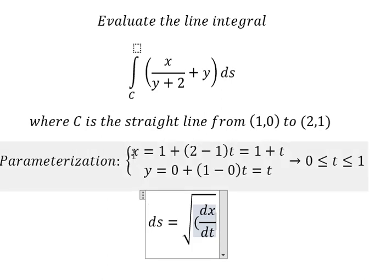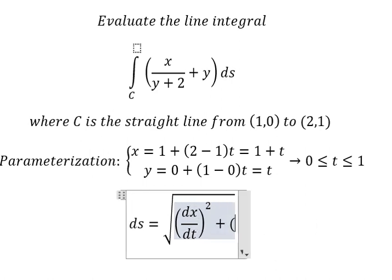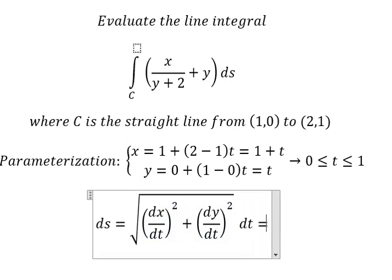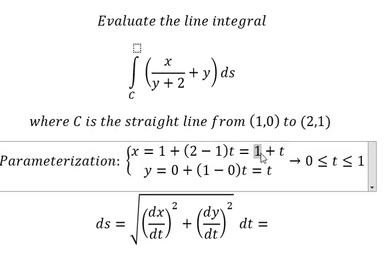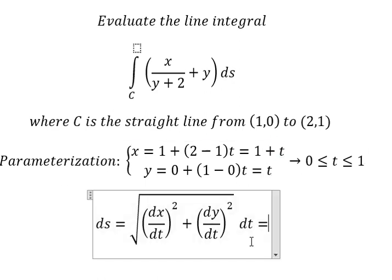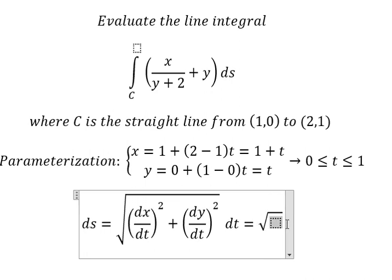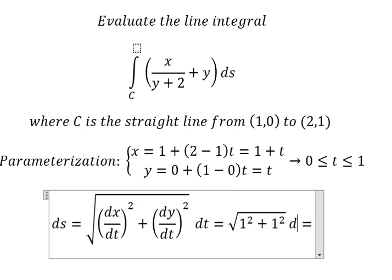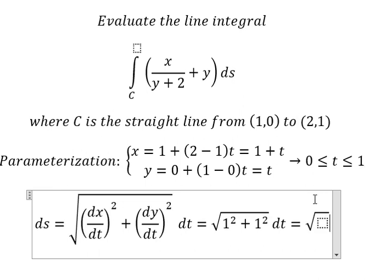That means we need to compute the derivative of x with respect to t, squared, plus dy over dt, squared, then integrate dt. The first derivative of x: this term is a constant so we get zero, and this term gives one. For y, the derivative is also one. So we have the square root of one squared plus one squared, which equals the square root of two, times dt.